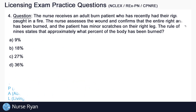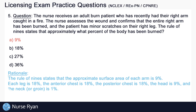Question number five: the nurse receives an adult burn patient who has recently had their right arm caught in a fire. The nurse assesses the wound and confirms that the entire right arm has been burned, and the patient has minor scratches on their right leg. The rule of nines states that approximately what percent of the body has been burned? The answer is A — 9%. The rule of nines states that the approximate surface area of each arm is 9%.